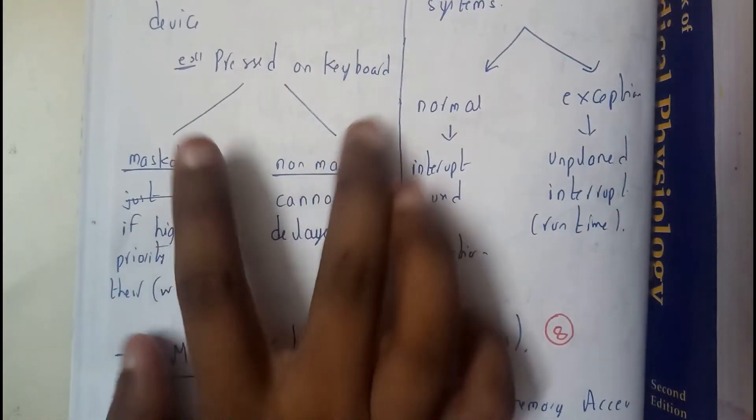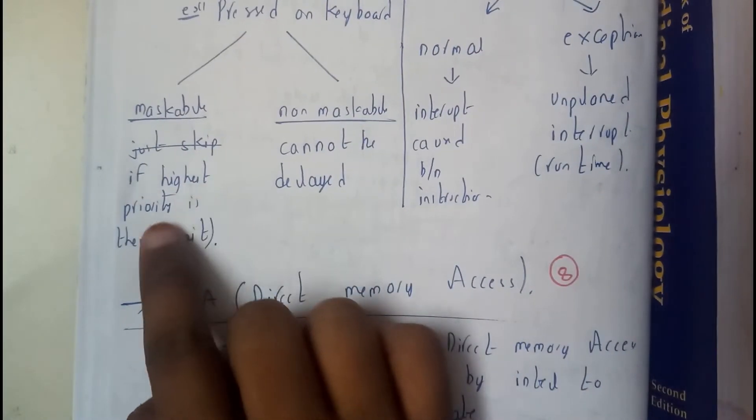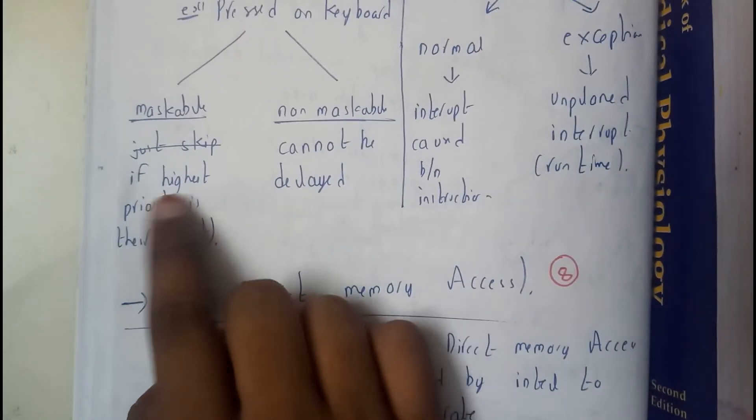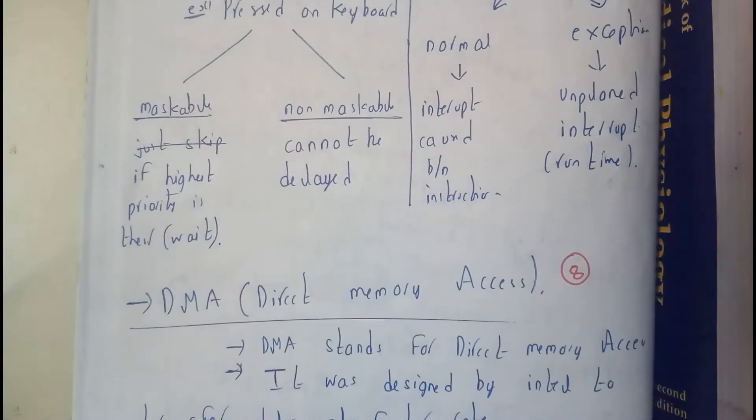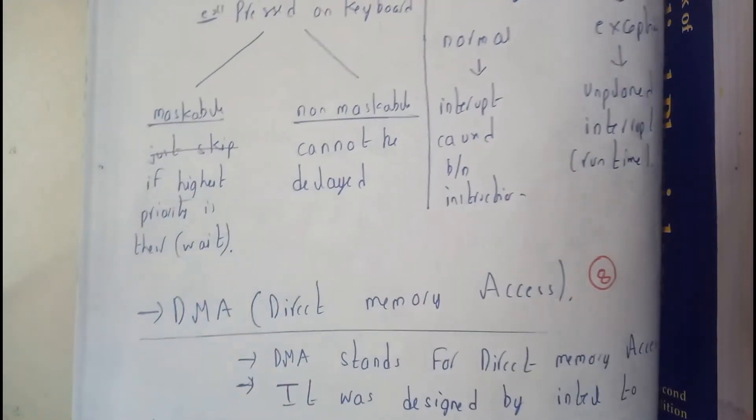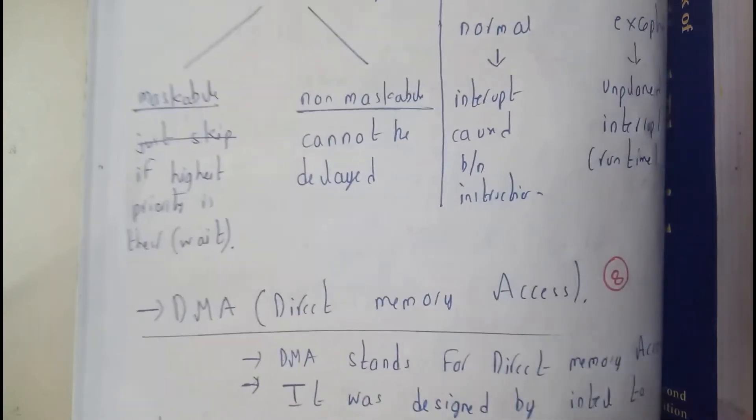In that there are two cases: maskable and non-maskable. Maskable means if high priority is there, then this will be waiting. Non-maskable means it cannot be delayed. Maskable can be paused or delayed for some time, whereas non-maskable should be done right at that moment.